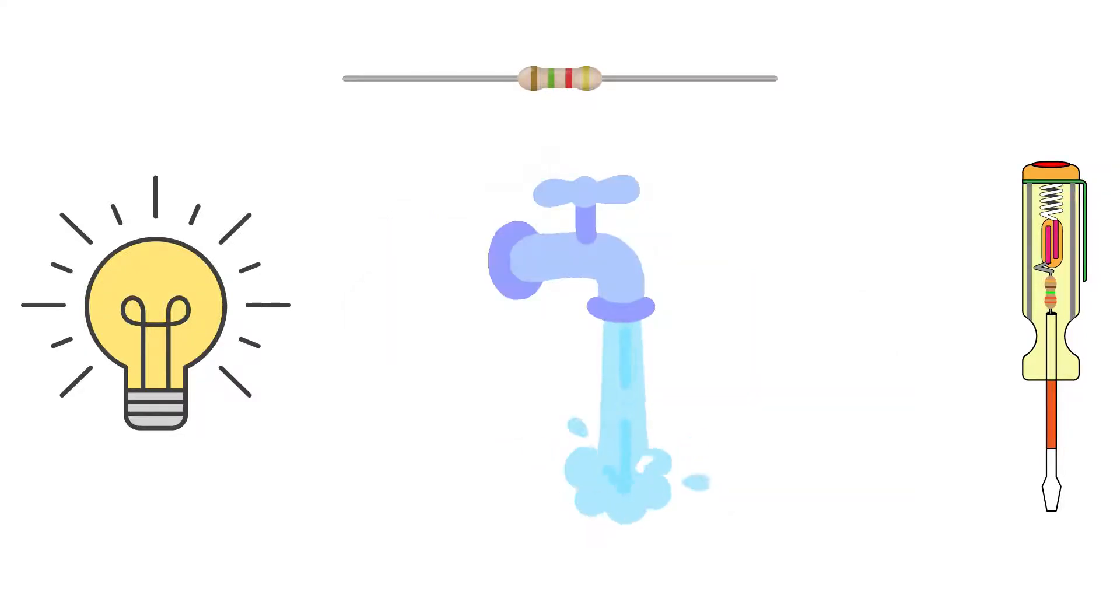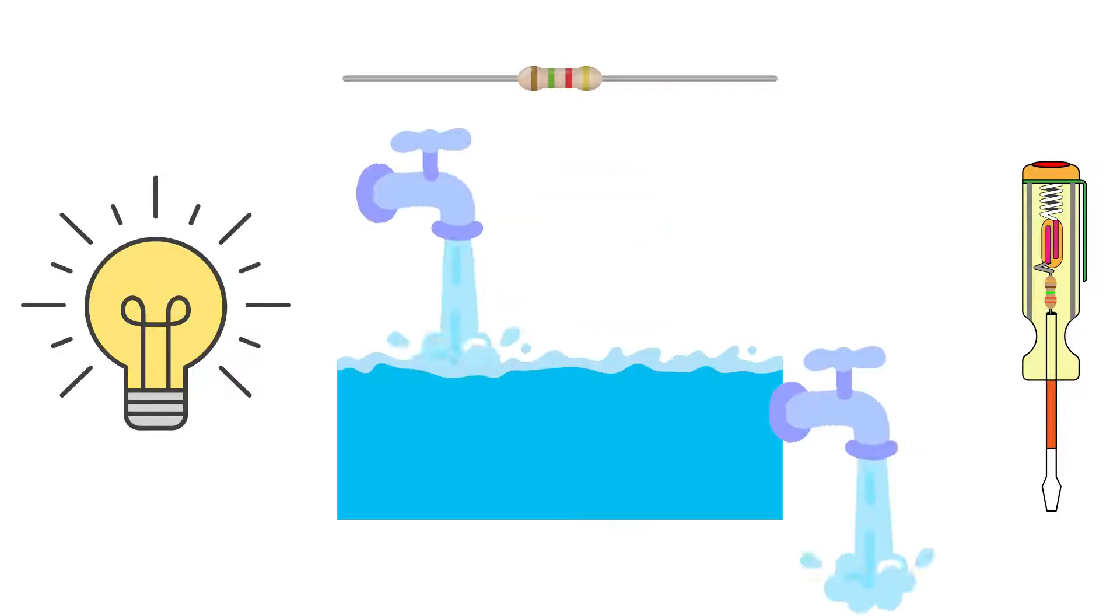Let's consider a water faucet delivering water. The water will continue to flow until we turn the faucet off. However, after the faucet, if we allow the water to first flow into a tank, then the tank will store some of the water but we will continue to get water from the second faucet connected to the tank as illustrated here.